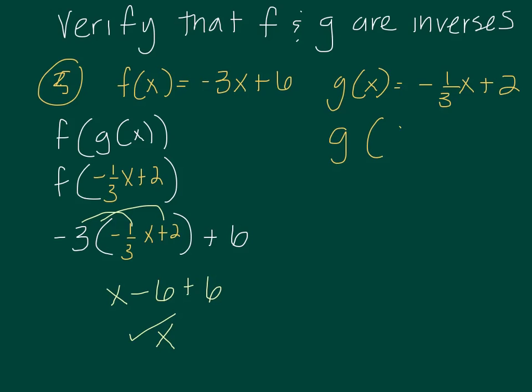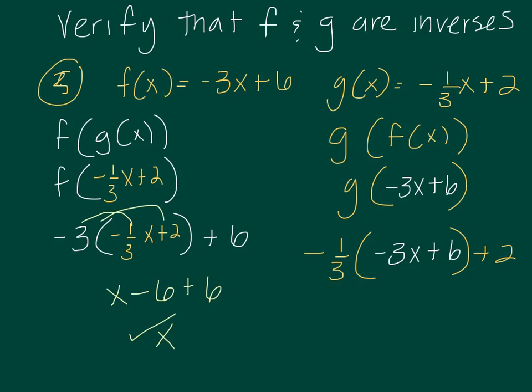So I'm going to do g of negative 3x plus 6. So this time, in function g, wherever there's an x, I went ahead and I'm going to substitute in for x. So I'm going to replace it with negative 3x plus 6. So I'm going to do negative 1 third times negative 3x plus 6 plus 2. When I distribute, I get x minus 2 plus 2, which is x.